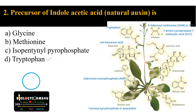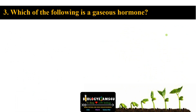Ethylene, the gaseous hormone: precursor is amino acid methionine. S-adenosyl methionine is converted to aminocyclopropane carboxylic acid (ACC), so the immediate precursor is ACC.